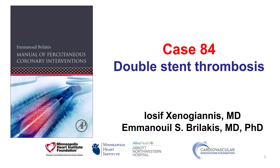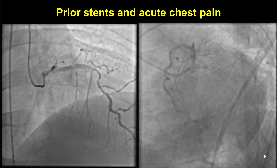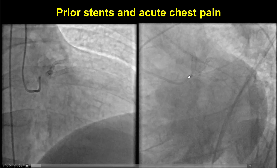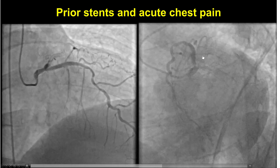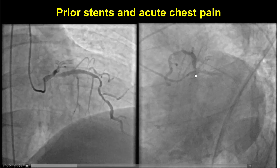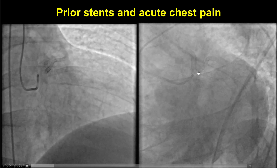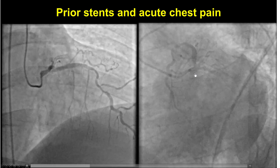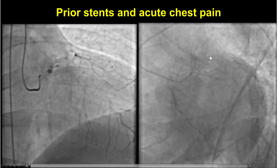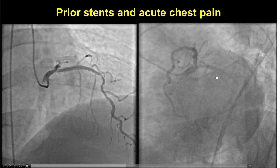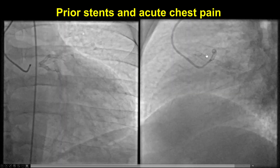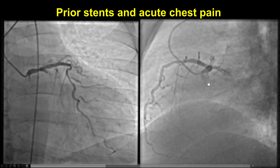This is a case of a patient who developed stent thrombosis in two vessels. The patient had previous stenting of a left main trifurcation with a large ramus, circumflex, and LAD, and presented with chest pain and ST segment changes. Emergency angiogram demonstrated thrombosis of both the ramus stent and the circumflex stent. You can see in different projections the filling defects inside the circumflex stent as well as inside the ramus stent.